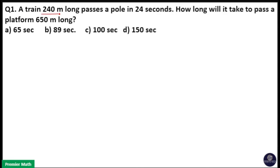A train 240 meters long passes a pole in 24 seconds. How long will it take to pass a platform 650 meters long?